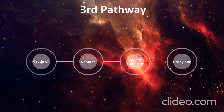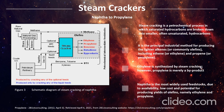For the third pathway, from crude oil we produce naphtha, which undergoes steam cracking to produce propylene. Steam cracking is a petrochemical process in which saturated hydrocarbons are broken down into smaller, often unsaturated hydrocarbons. It is a principal industrial method for producing lighter olefins including ethylene and propylene. Ethylene is synthesized by steam cracking; however, propylene is mainly a by-product. Naphtha is the most widely used feedstock due to its availability, low cost, and potential for producing yields of olefins, namely ethylene and propylene.